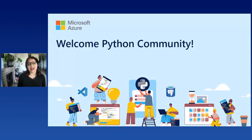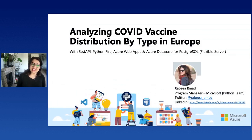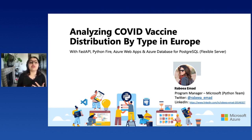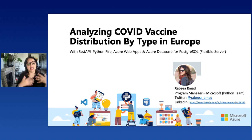Hello everyone in Europe and elsewhere who are joining me today. I'm so honored to have the privilege of your audience and I have a lot of exciting things for you today. First off, a huge shout out to the Python community from Microsoft — we love working with you and building great tools for you. Thank you to EuroPython for having us here. The title of the talk is analyzing COVID vaccine distribution by type in Europe, using FastAPI, Python Fire, Azure Web Apps, and Azure Database for PostgreSQL Flexible Server Edition.